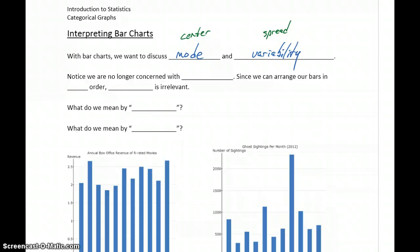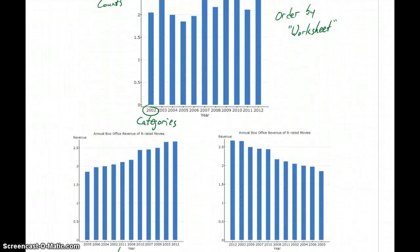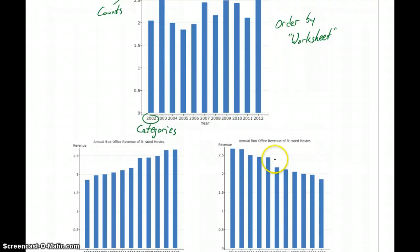One thing we won't be talking about with bar charts is the idea of shape. As we saw in the examples on the first page, we can choose to order our bars in any order that we want: ascending, descending, chronologically.